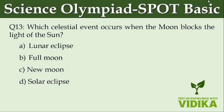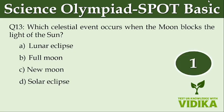Which celestial event occurs when the moon blocks the light of the sun? Option A, lunar eclipse. Option B, full moon. Option C, new moon. Option D, solar eclipse.